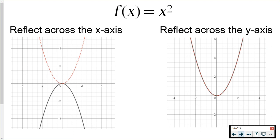As you can see from the graphs, the reflection across the x-axis started with the red parabola facing up. Once you reflect the equation, it's now facing down.